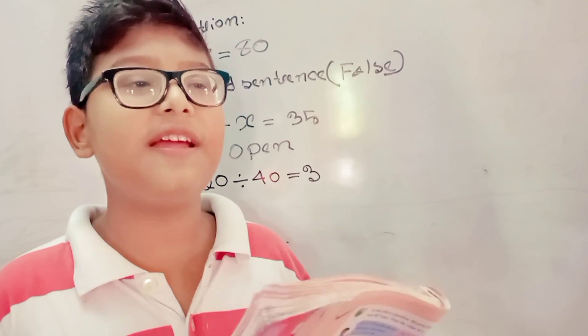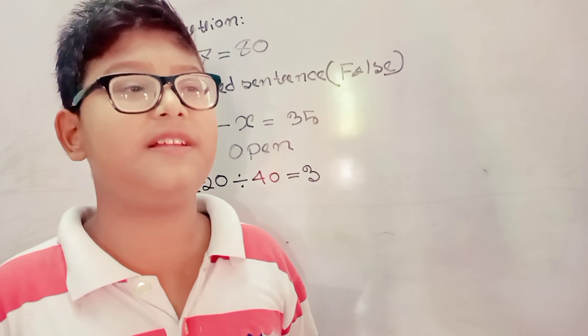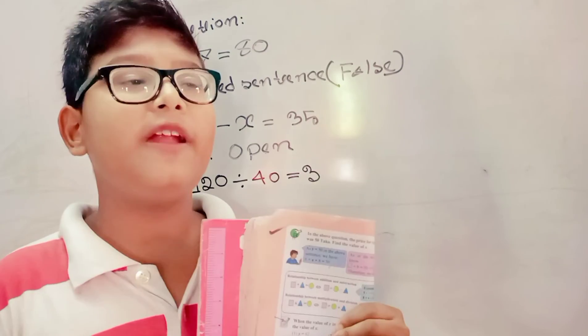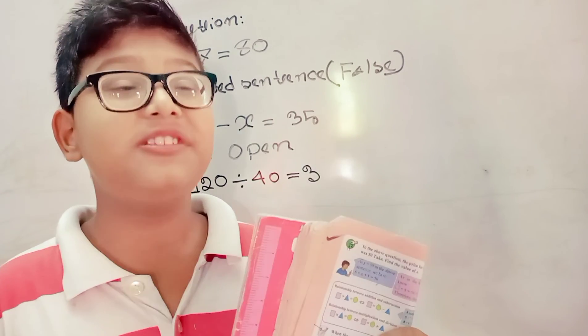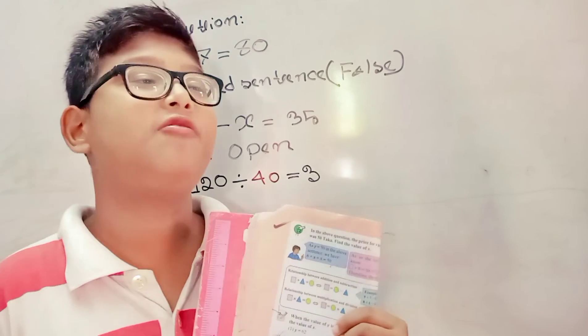Turning this sentence into a mathematical sentence, we got 120 divided by 40 equal to 3. Because, 3 multiplied by 40 equal to 120.